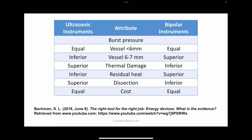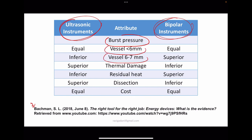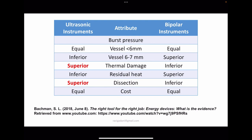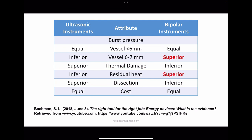A comparison between ultrasonic and modern bipolar instruments: regarding thermal damage laterally and dissection capability, ultrasonic instruments are superior. But for vessel sealing of 6–7 mm vessels and for lesser residual heat, bipolar instruments were superior.